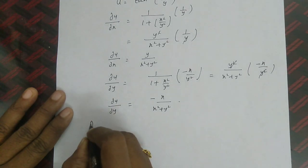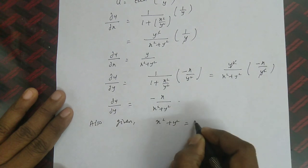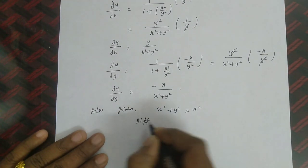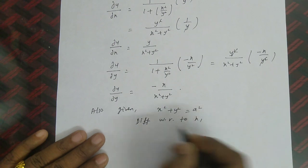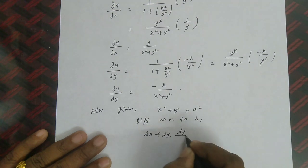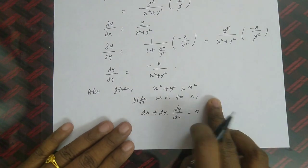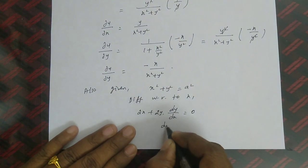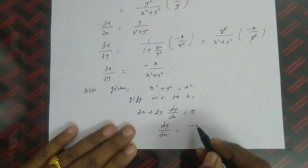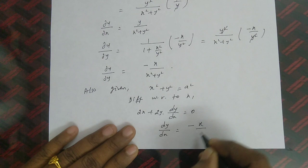Also given: x² + y² = a². Differentiating with respect to x: 2x + 2y(dy/dx) = 0, since the right-hand side a² is a constant. So dy/dx = -x/y.